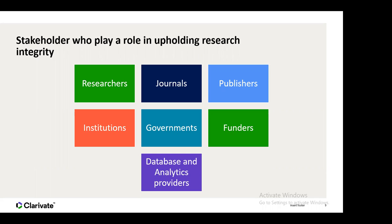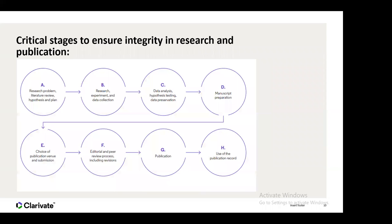Database and analytics providers like ourselves at Clarivate obviously play a role in terms of how we index journals, how we showcase metrics, and ensuring we're being very transparent in how the metrics we produce are used by important decision makers. We also need to ensure we're practicing what we preach — being transparent around how we ensure research integrity within our own organization and in the products, databases, and analytic solutions we provide to customers.